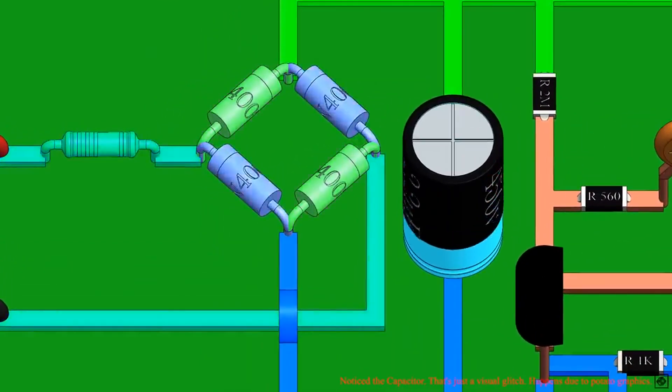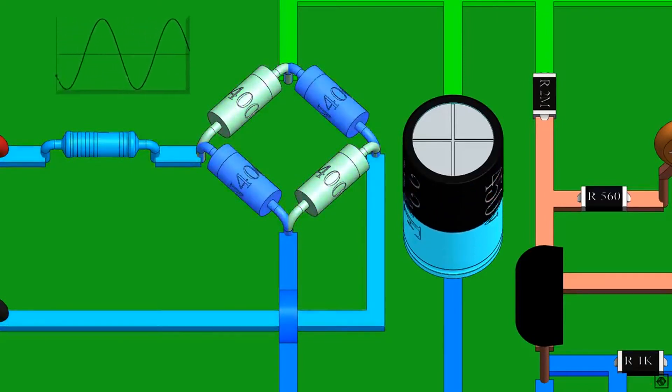Let's turn it on and see it in action. The green wires carry the positive voltage and the blue wires carry the negative voltage or ground. Also, we can see the voltage in the circuit on the graphs.